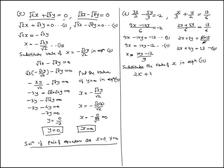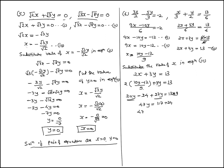So x equal to (10y minus 12) upon 9 from equation 1 (equation 3). We substitute in equation 3: 2 into (10y minus 12) upon 9 plus 3y equal to 13. Expanding: 20y minus 24 upon 9 plus 27y upon 9 equal to 13, giving 20y plus 27y equal to 117 plus 24, so 47y equal to 141.